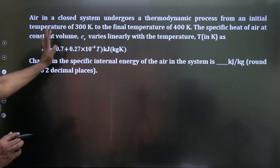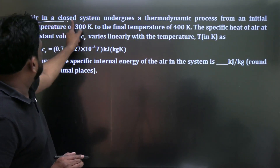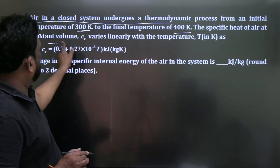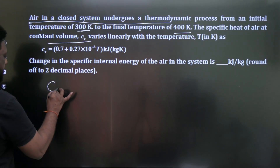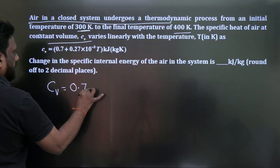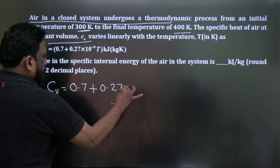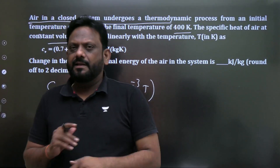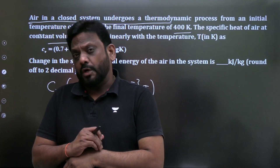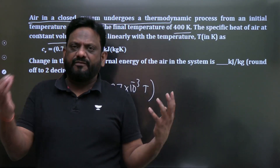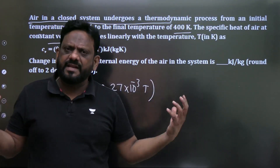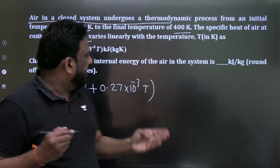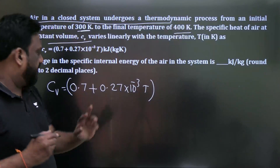Next question: air in a closed system undergoes a thermodynamic process from initial temperature T1 = 300 K to final temperature T2 = 400 K. The specific heat at constant volume Cv is a function of temperature: Cv = 0.7 + 0.27 × 10⁻³·T kJ/kg·K. Since Cv varies with temperature, this is a semi-perfect gas, not a perfect gas.